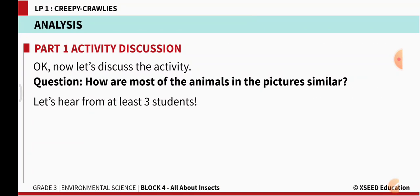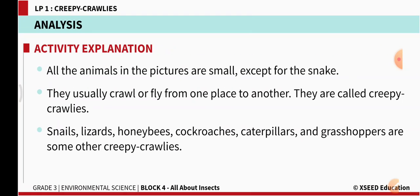How are most of the animals in the pictures similar? All the animals in the pictures are small, except for the snake. They usually crawl or fly from one place to another — they either move closely to the land or they fly. They are called creepy crawlies.